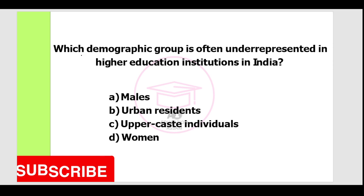Next question. Which demographic group is often underrepresented in higher education institutions in India? Option A: males. Option B: urban residents. Option C: upper class individuals. Option D: women. The correct answer is Option D, women.